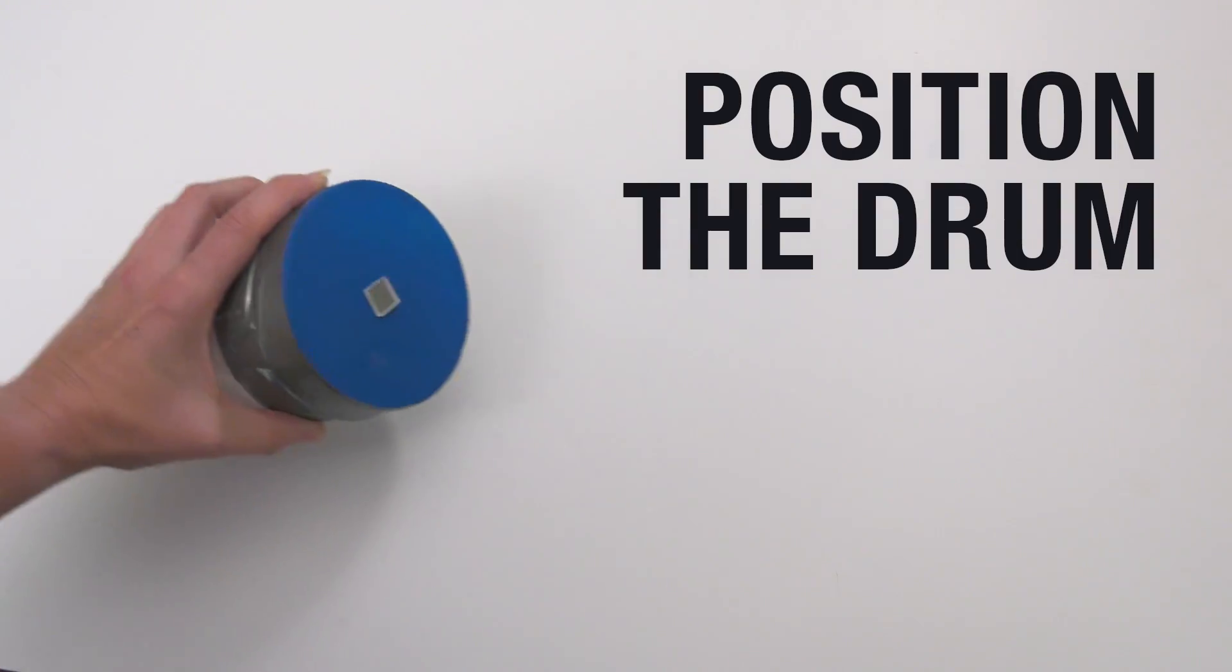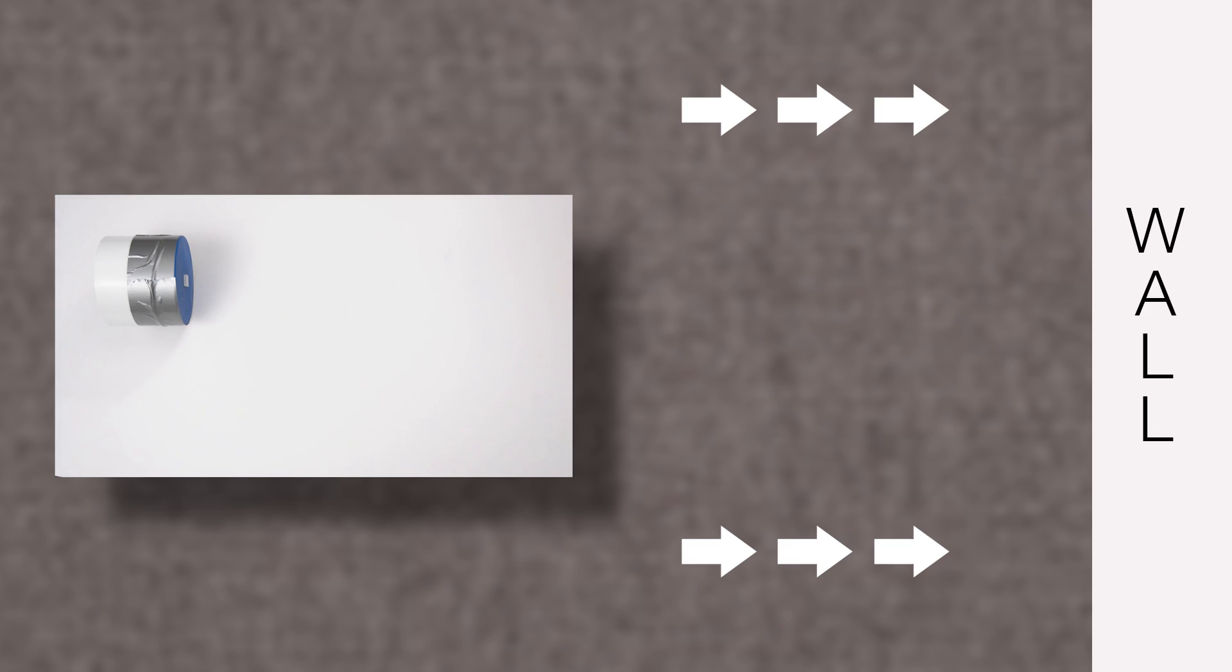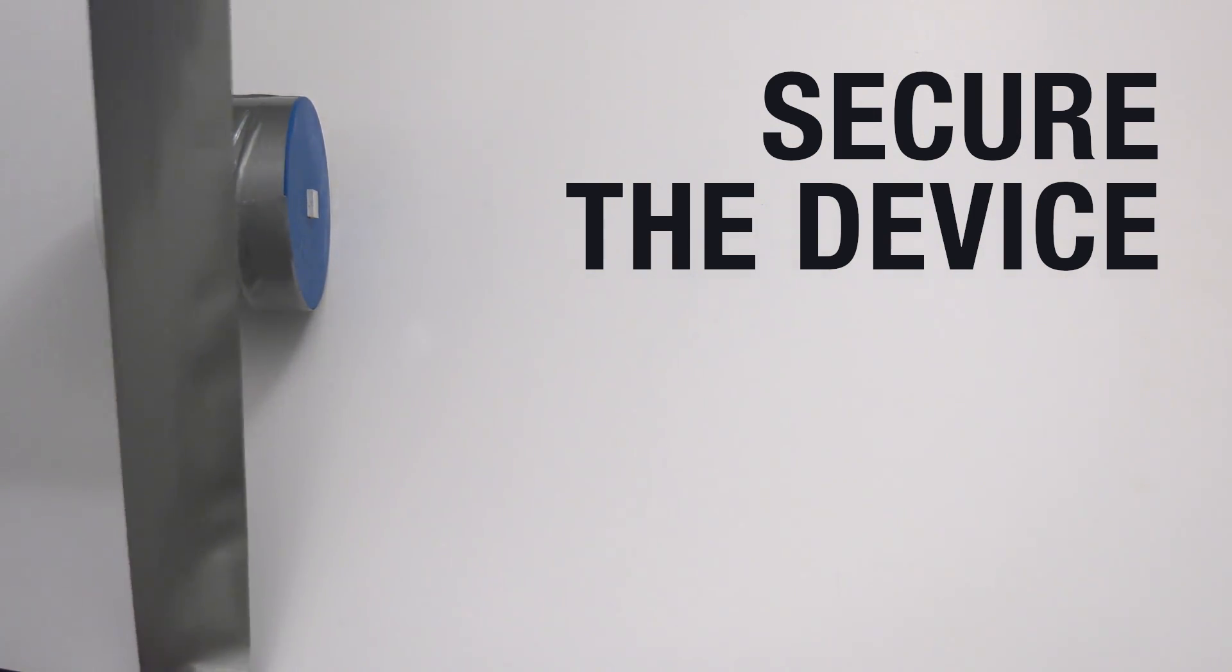Once the glue has dried, turn the drum on its side with the balloon end facing a wall. Using duct tape, firmly secure the device to the table so it can't move.